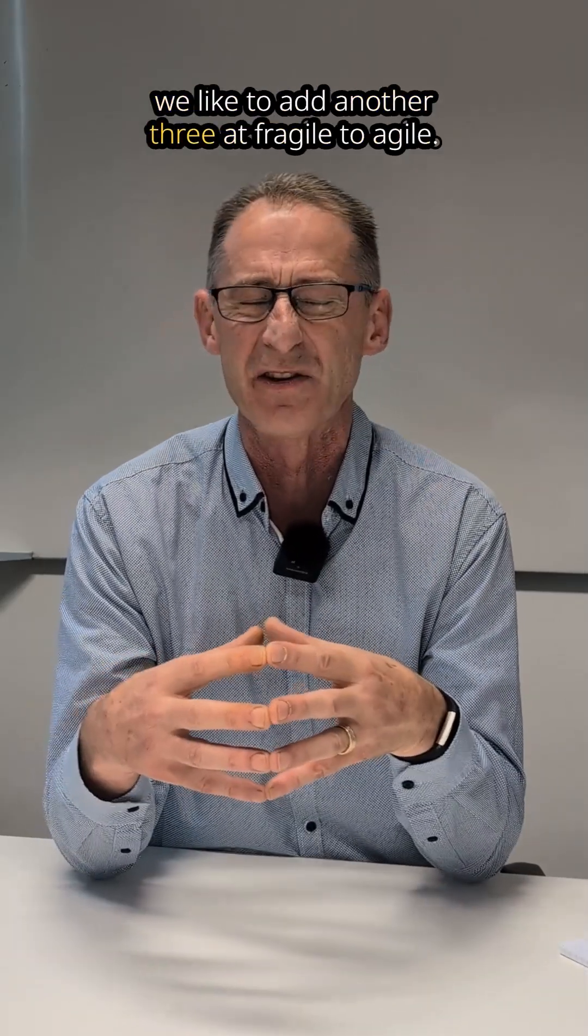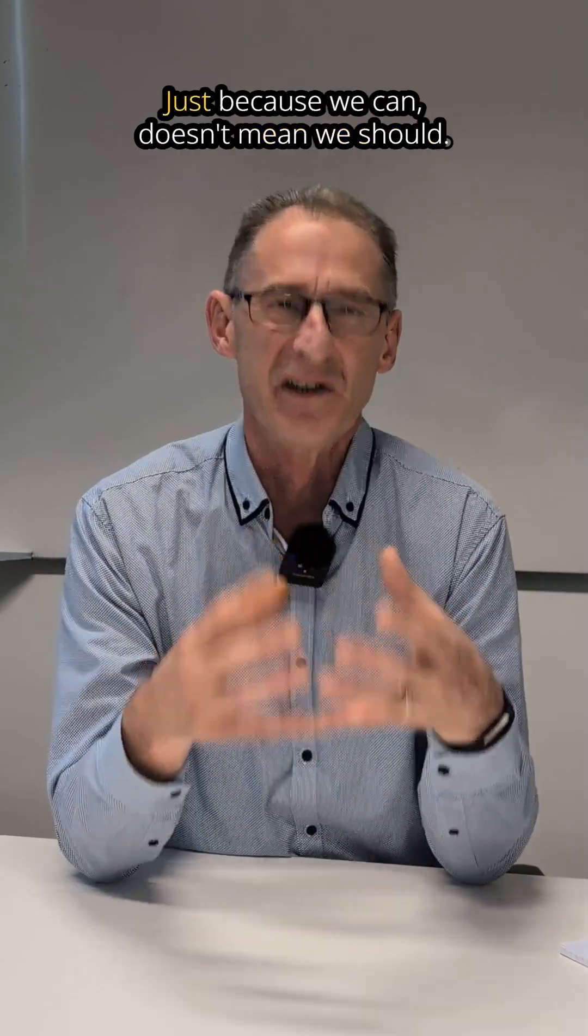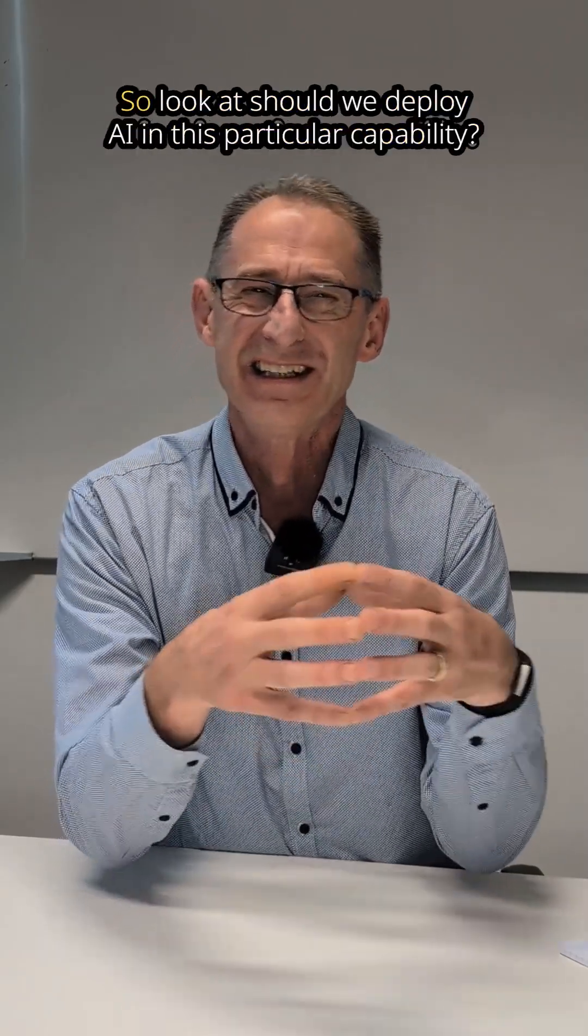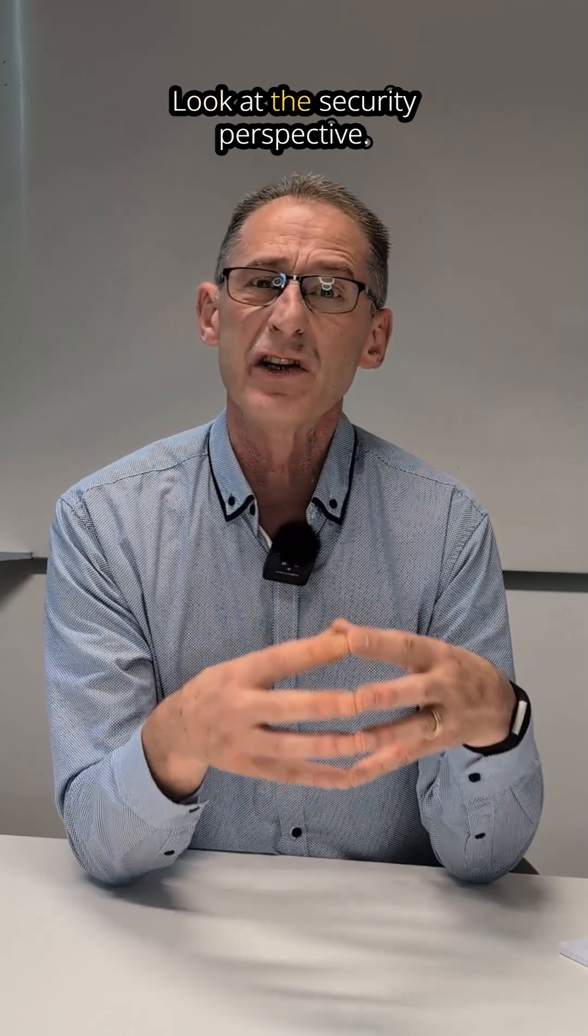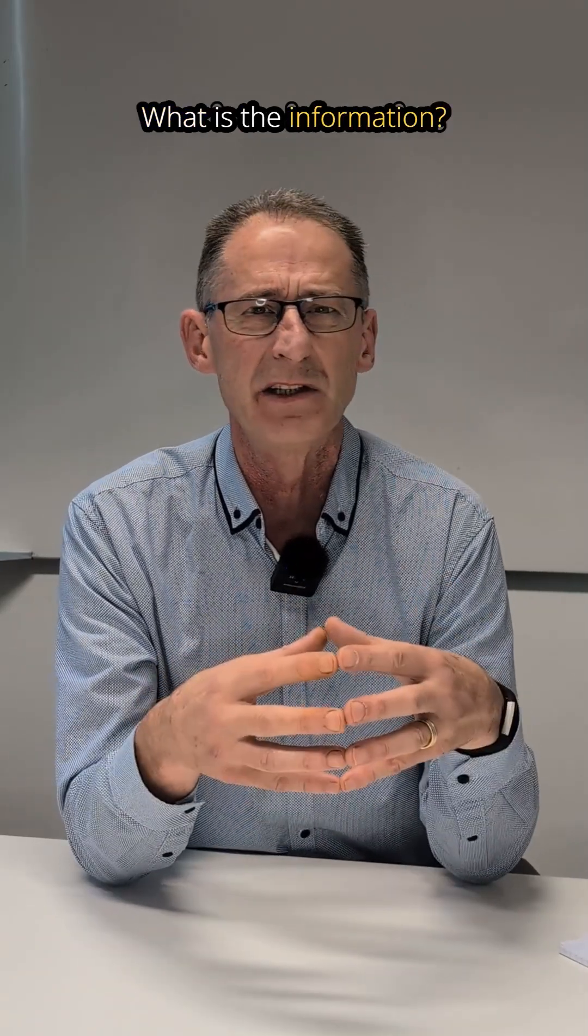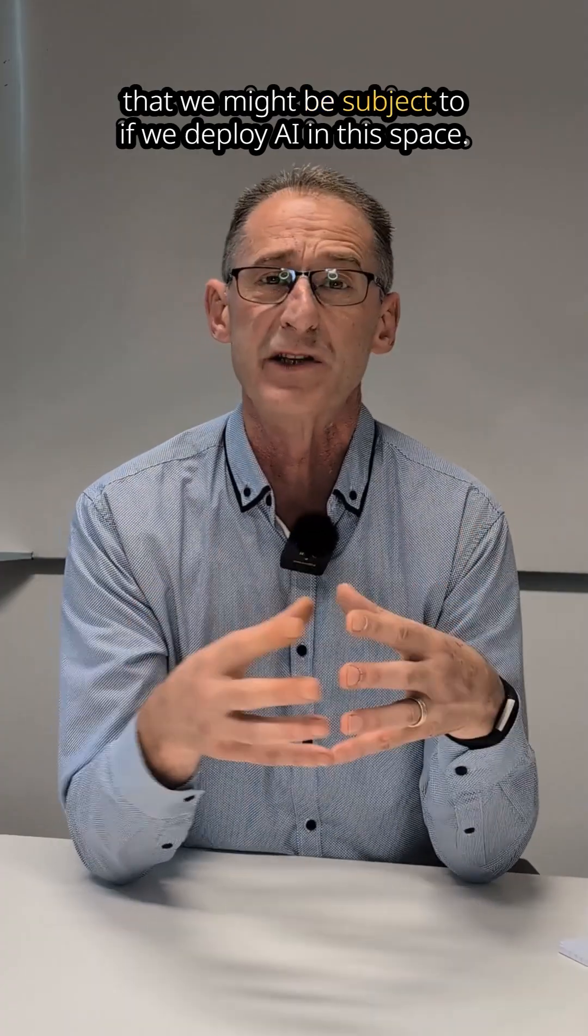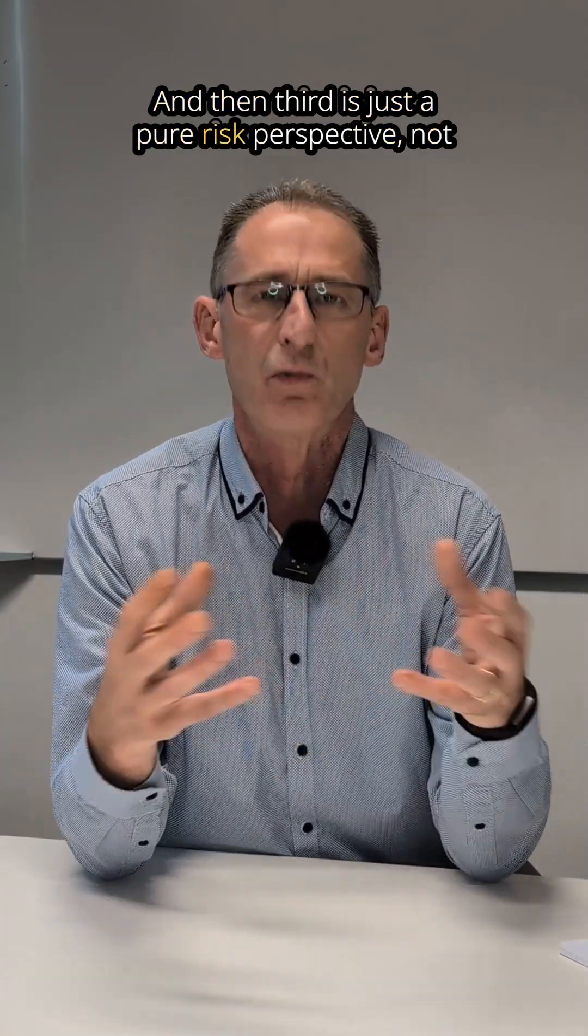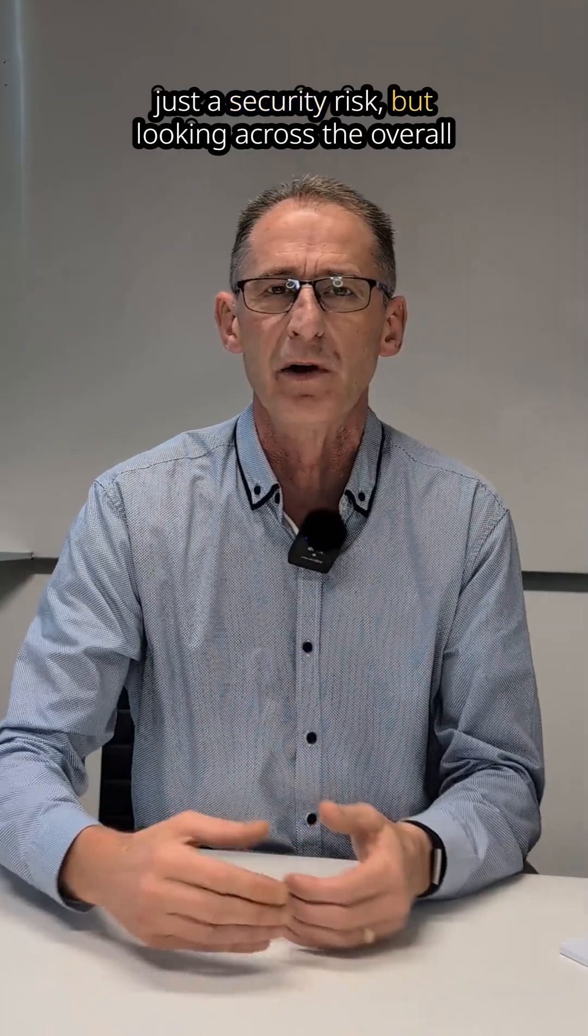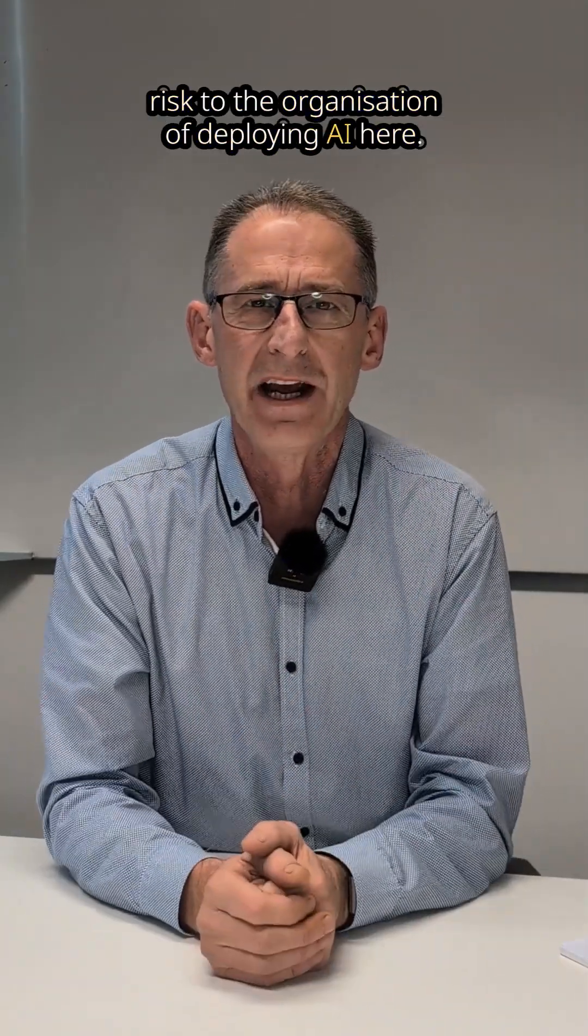So they're the four traditional ones, but we'd like to add another three at Fragile to Agile. We look at the ethical perspective. Just because we can doesn't mean we should. So look at, should we deploy AI in this particular capability? Look at the security perspective. What is the level of information security risk that we might be subject to if we deploy AI in this space? And then third is just a pure risk perspective, not just security risk, but looking across the overall risk to the organization of deploying AI here.